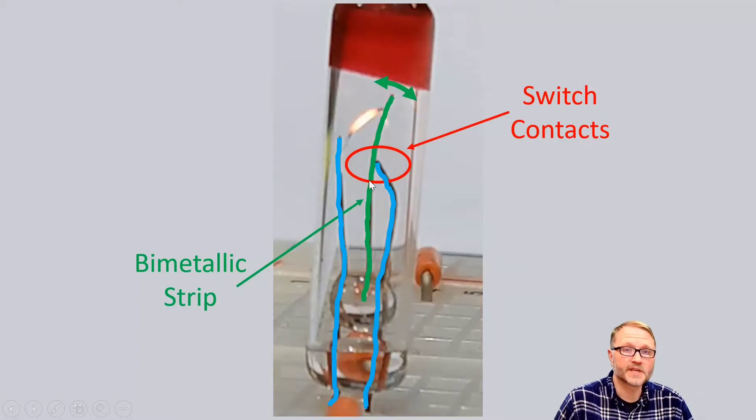Now the way a bimetallic strip works is there's two different types of metal, and when it heats up it bends. So in this particular case when this strip heats up, again the filament's connected to it and there's current flowing through it, so when this thing heats up it's going to move in a counterclockwise direction. It's going to move to the left. When it does that it opens up the switch contact.